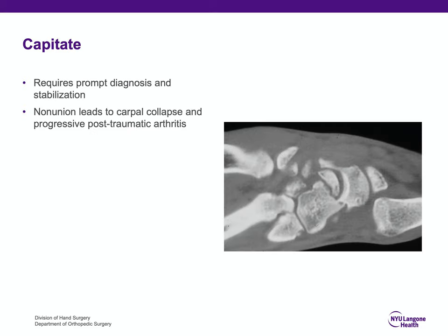You can see this is a CT scan of a capitate fracture showing the displacement of the proximal pole. The proximal pole has really no soft tissue attachments — it is a freely floating piece of articular cartilage with underlying bone — and requires prompt diagnosis and stabilization. If it goes on to nonunion, it often leads to carpal collapse and progressive mid-carpal arthritis.